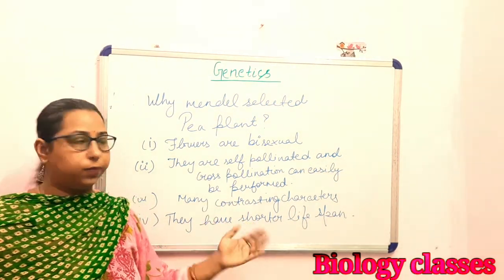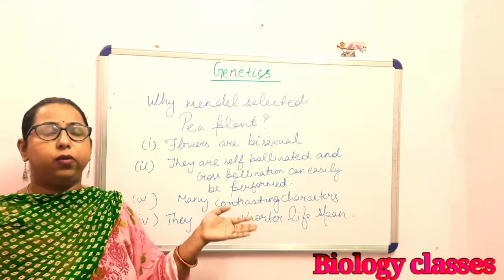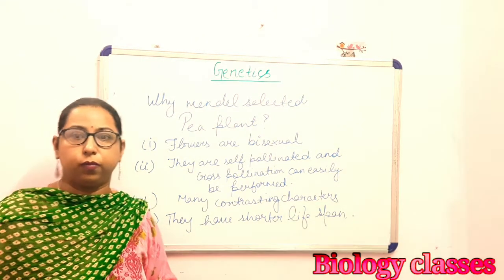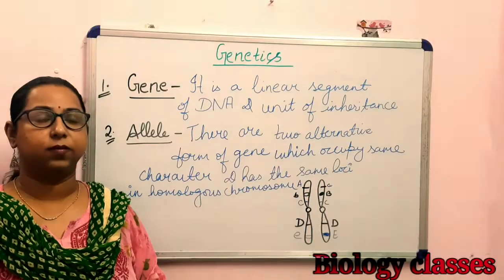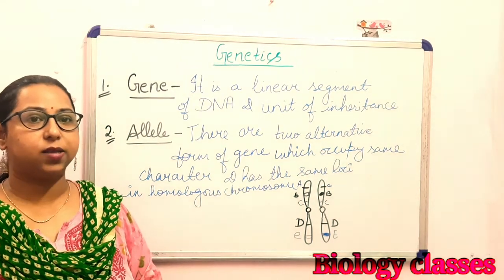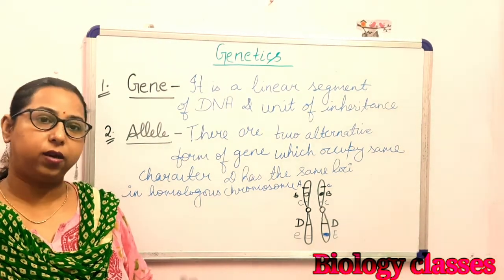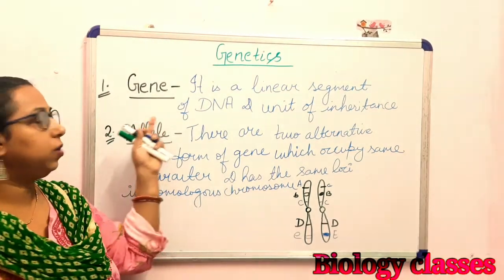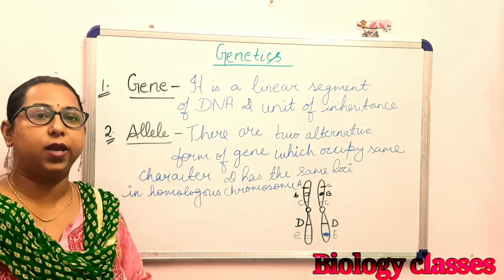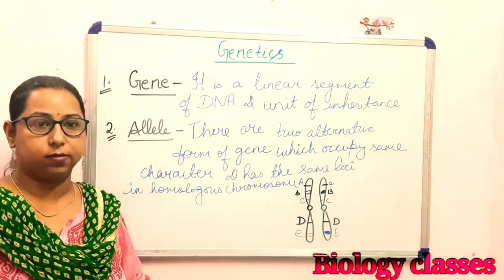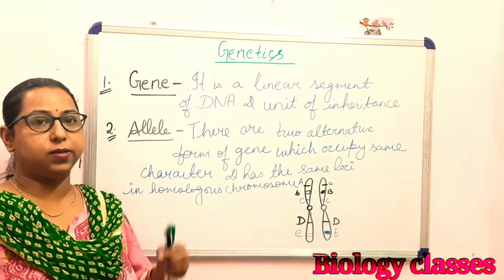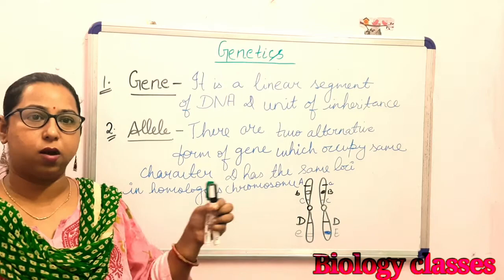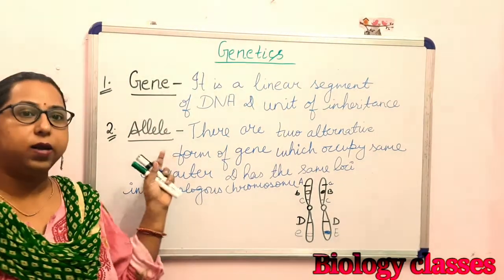Now I'm going to tell you about some terms related to genetics which need to be known. The first one is a gene. A gene is a linear segment of DNA and a unit of inheritance. It is a basic structure of DNA which is passed on from parents to offspring.